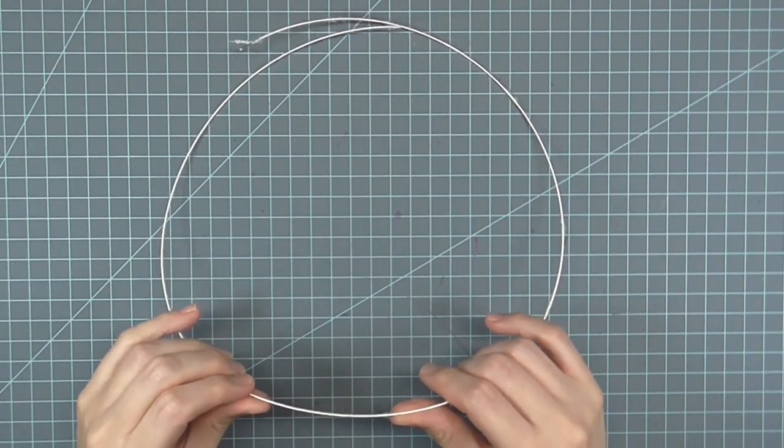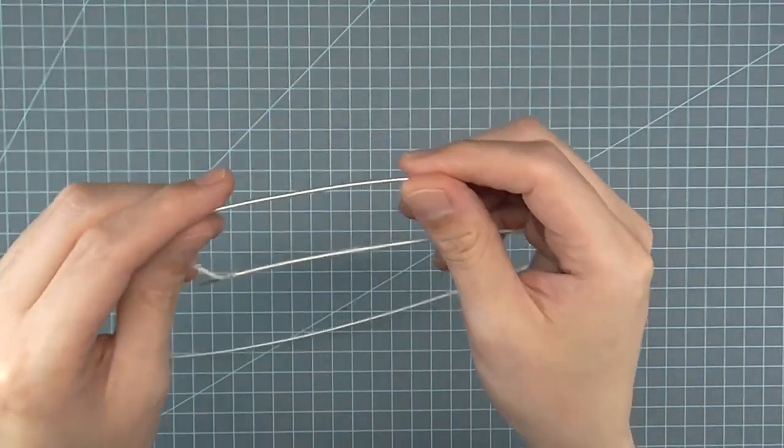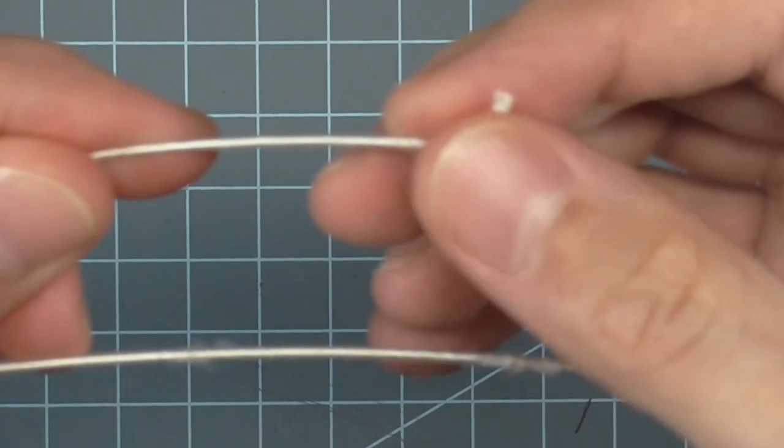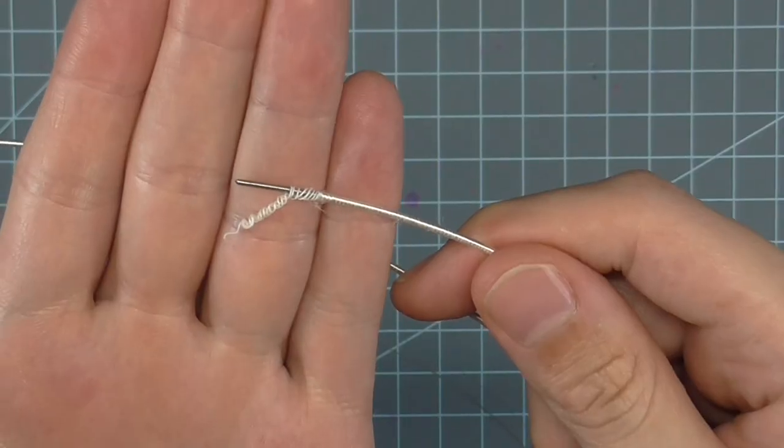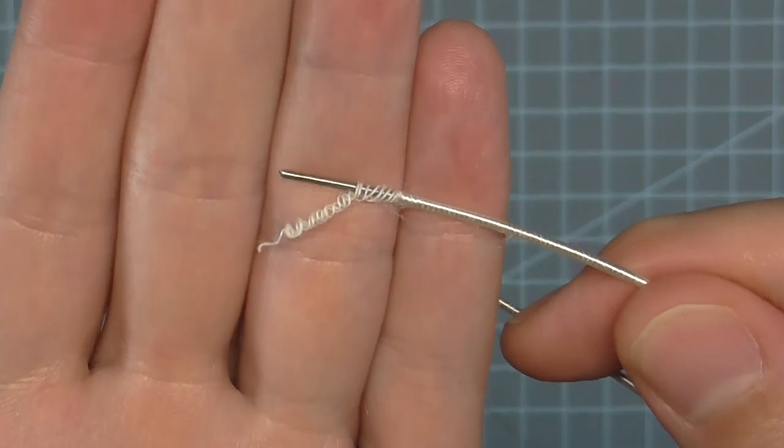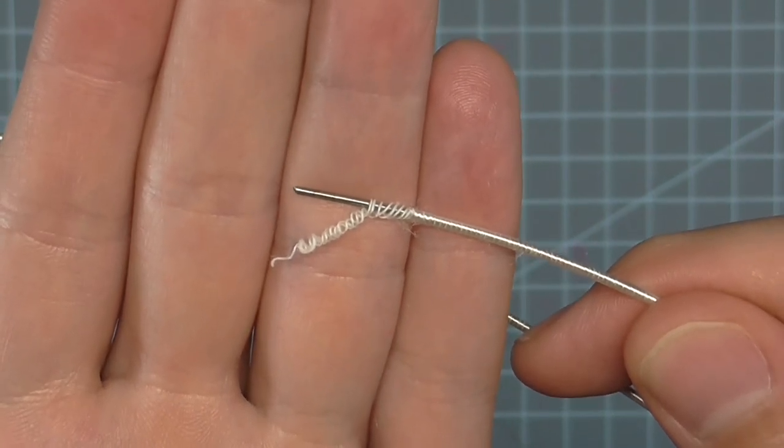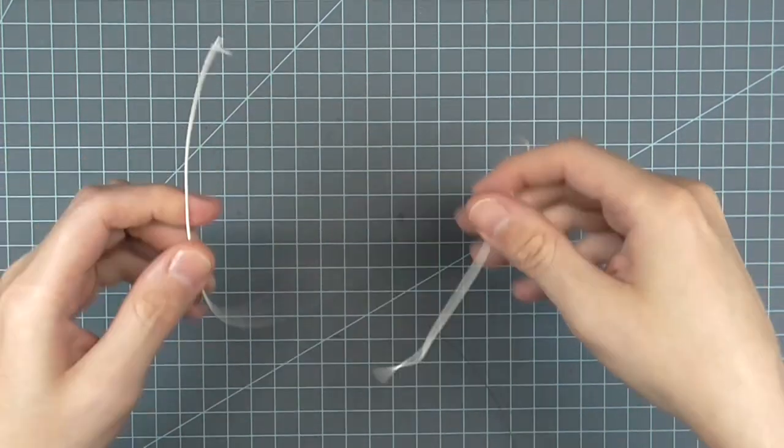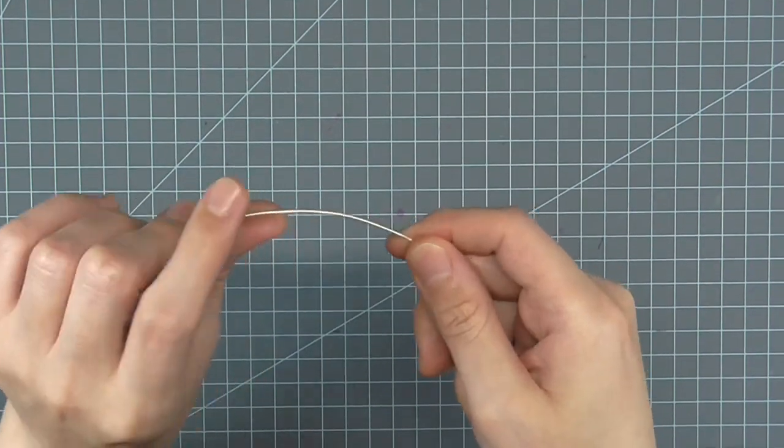Millinery wire comes in the same gauges as any other wire, except it is wrapped with a rayon thread that helps to hold onto the edge of the buckram. The wrapping helps catch the needle when hand stitching. For most millinery applications, you will need number 19 wire. The bigger the gauge number, the thinner the wire will be and therefore more flexible.